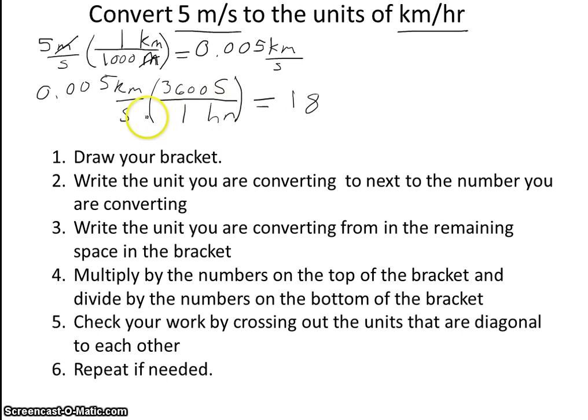And I can find my units again by crossing out the units that are diagonal from each other. So kilometers isn't diagonal to hours, so that's fine. Seconds is diagonal to seconds, so those cross out. And I'm left with kilometers over hours. Okay. So in this case, 5 meters per second is the same as 18 kilometers per hour.